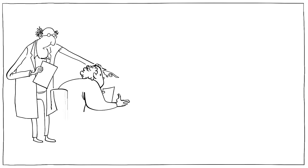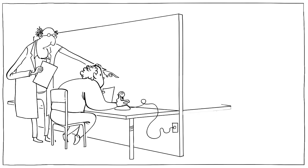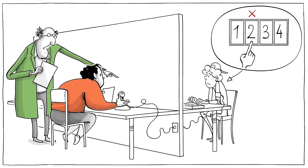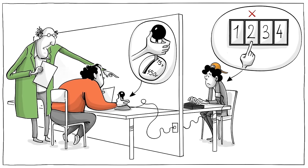Following orders, the teacher would test a student who was sitting in another room by asking them questions. For every wrong answer, the experimenter would ask the teacher to inflict an electric shock, up to a life-threatening 450 volts.